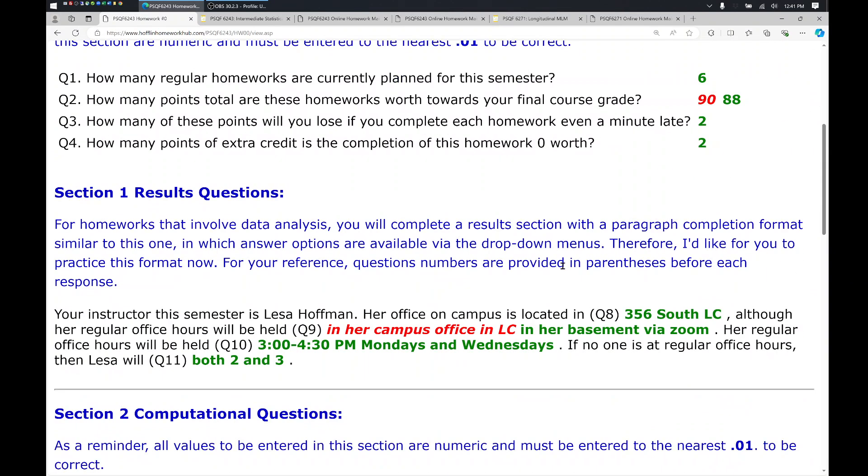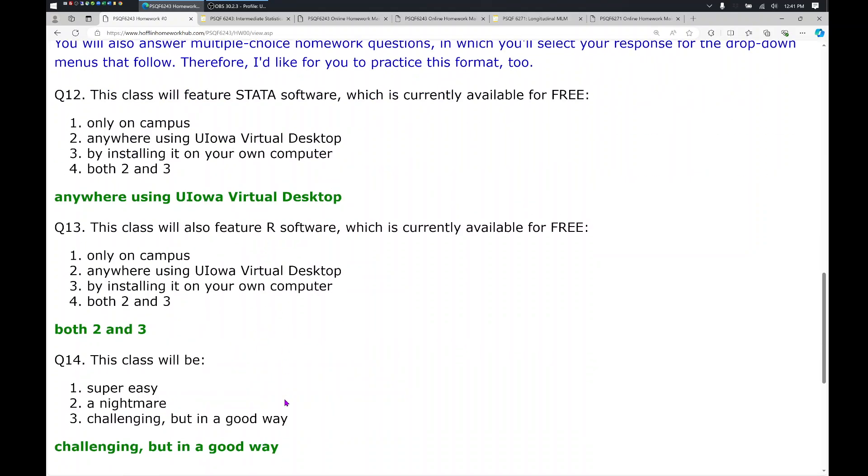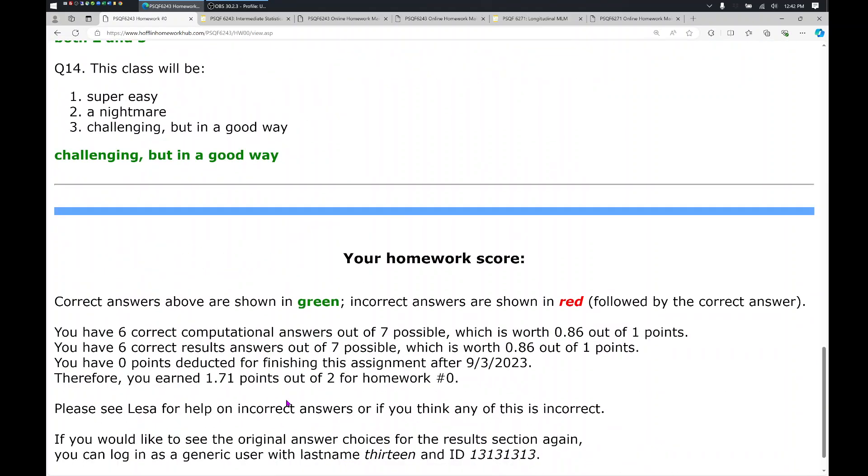For the results questions, they will give the wrong answers in the red font, followed by the correct answers in the green font. And the same thing will be true for the drop-down questions down here. Incorrect answers will be shown in red, followed by correct answers shown in green.